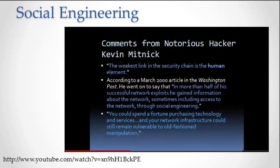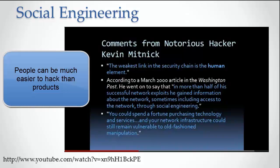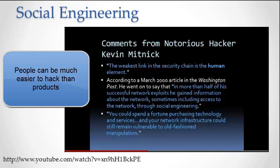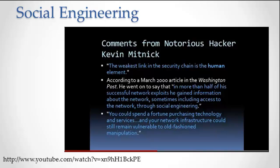Here are some comments from notorious hacker Kevin Mitnick. He said the weakest link in the security chain is the human element. And according to a March 2000 article in the Washington Post, in more than half of his successful network exploits, he gained information about the network — sometimes including access to the network — through social engineering. He also said you could spend a fortune purchasing technology and services, and your network infrastructure could still remain vulnerable to old-fashioned manipulation.